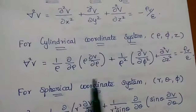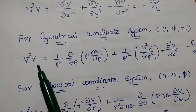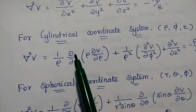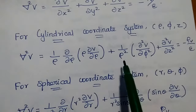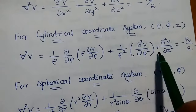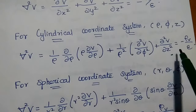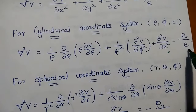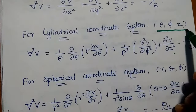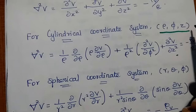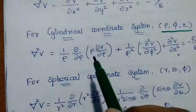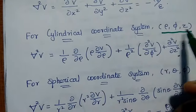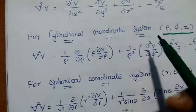For the cylindrical coordinate system with coordinates rho, phi, z, the same procedure is followed. Del squared V equals 1 over rho times partial by partial rho of rho times partial V by partial rho, plus 1 over rho squared times partial squared V by partial phi squared, plus partial squared V by partial z squared, equals minus rho V by epsilon. Del squared V means finding the gradient of V in terms of rho, phi, z and then taking the divergence of that value.